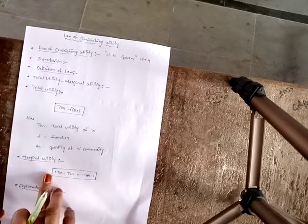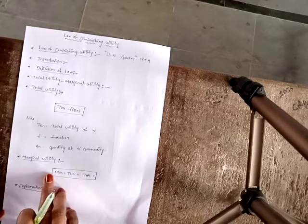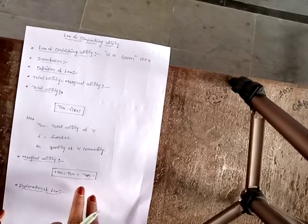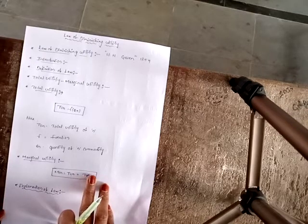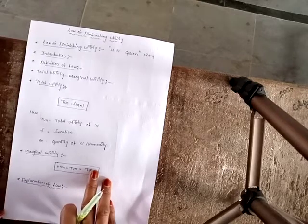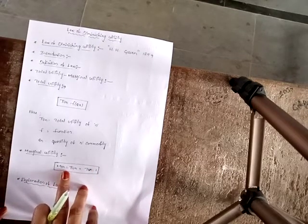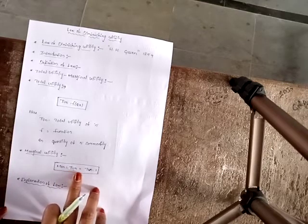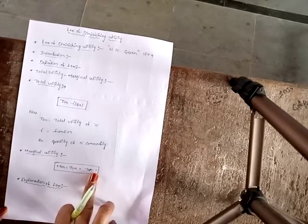Marginal utility is the additional utility obtained from an additional unit of commodity consumed. It can be expressed as: Marginal Utility = Total Utility of n units minus Total Utility of (n−1) units.